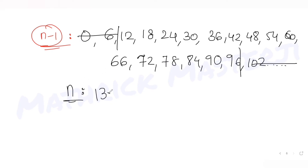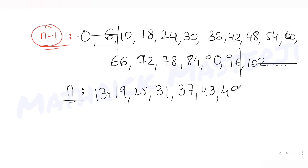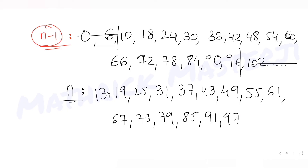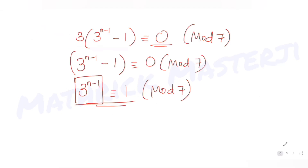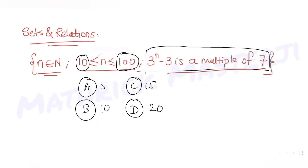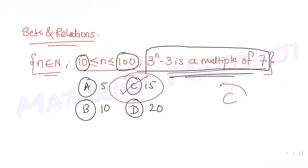Adding 1 to each valid value of n-1, the values of n are: 13, 19, 25, 31, 37, 43, 49, 55, 61, 67, 73, 79, 85, 91, and 97. Counting these gives 15 terms, so the set has 15 elements. This matches option C, which is the correct answer.